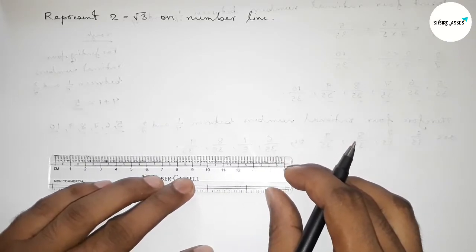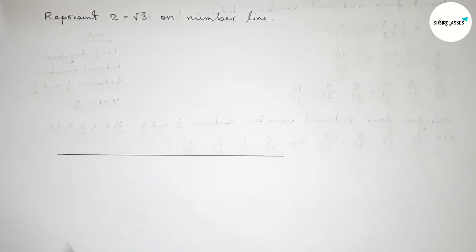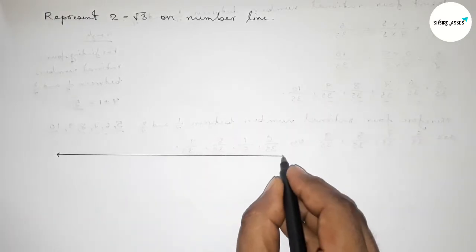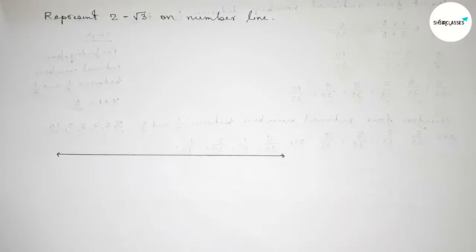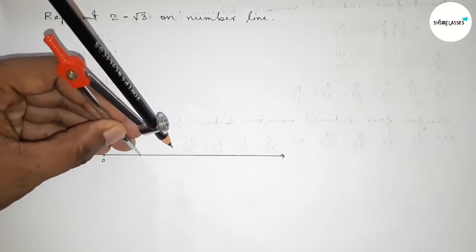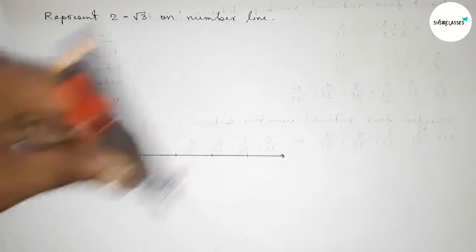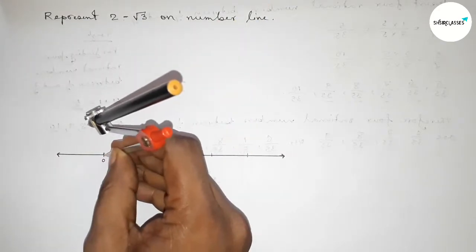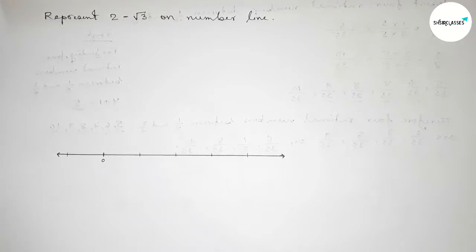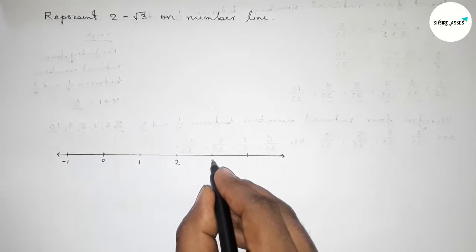First of all we have to construct a number line. Drawing here a line of any length and taking arrow marks on both sides. Now taking here number zero. Next we have to mark the numbers on the line by using compass, taking any length and marking the numbers. The length of the compass is one unit length.